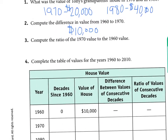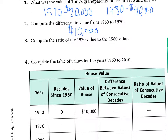Number three says to compute the ratio of the 1970 value to the 1960 value. Ratio is another word for a fraction. The value in 1970 was $20,000 and the value in 1960 was $10,000. You can cancel out the zeros and you'll see that the ratio is 2 to 1, or just 2.